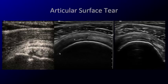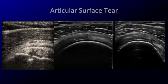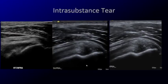Articular surface tears are on the articular side. You can see a defect in the rotator cuff tendon — here supraspinatus — and the underlying bone is irregular. Be careful not to confuse this with anisotropy, an artifact: when tendon fibers are not perpendicular to the transducer beam, they can appear hypoechoic. If you're not sure, re-angle or rock your transducer; if the hypoechoic area persists, you're looking at either tendinosis or a tear. Here the tear is more subtle, but you can see the cartilage interface sign, confirming an articular surface tear.